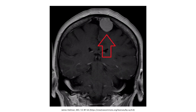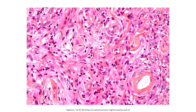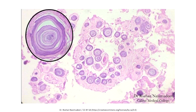Here's an MRI of someone with a meningioma. Notice how the mass is attached to the dura mater and is compressing but not invading the cortex. Here's a histological image showing the whorled pattern seen in meningioma — we can see that quite well right here. When these whorled patterns of cells get calcified, they're referred to as psammoma bodies. We can see these on this slide — notice the psammoma bodies right here, and a zoomed-in version right here.